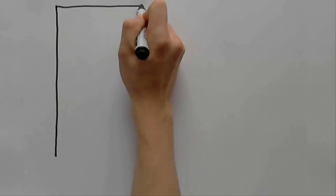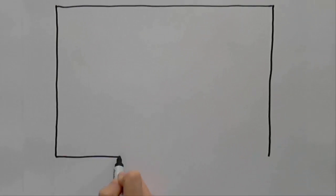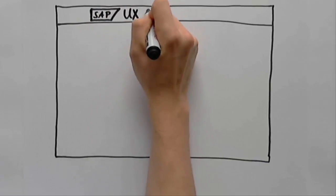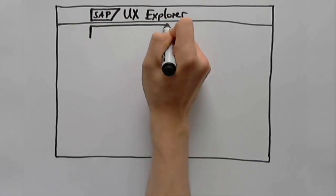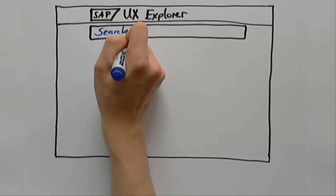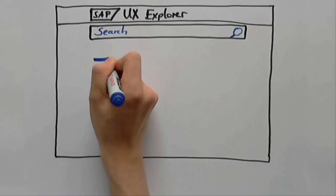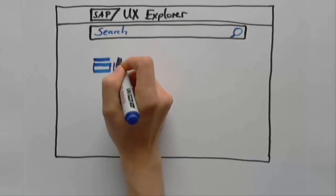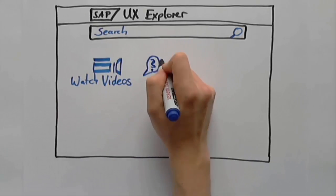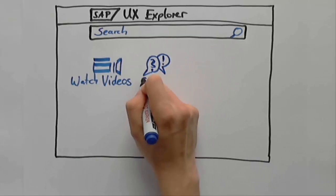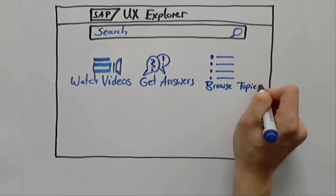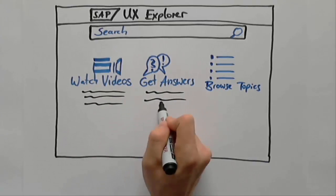To find your initial starting point in the Semantic Network, SAP UX Explorer offers the search function as the main entry point. Here you can find and start with what you already know, what you have heard about, or what you are interested in right now. In case you need some inspiration, we also offer 'Watch Video,' 'Get Answers,' and 'Browse Topics' as additional ways to find your starting point.